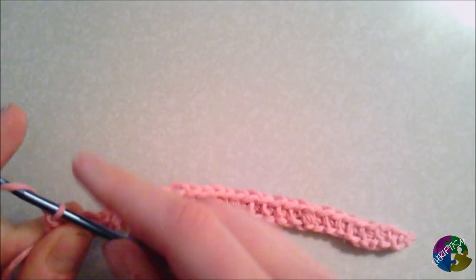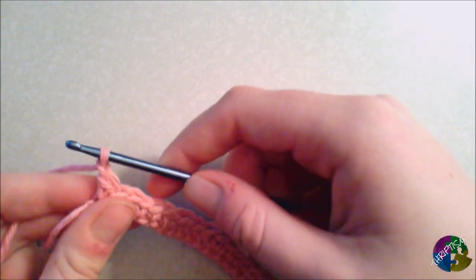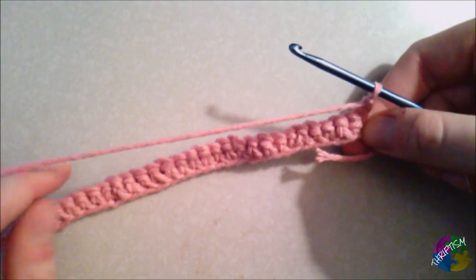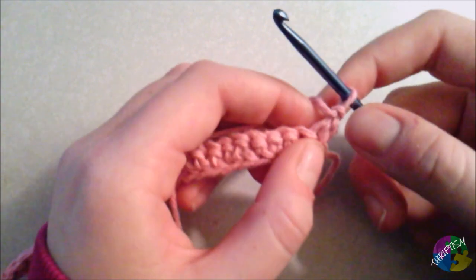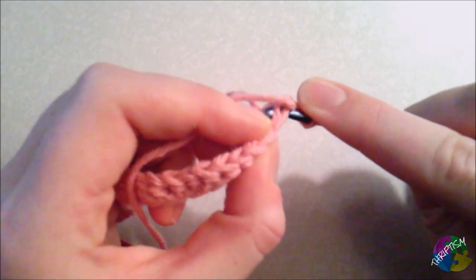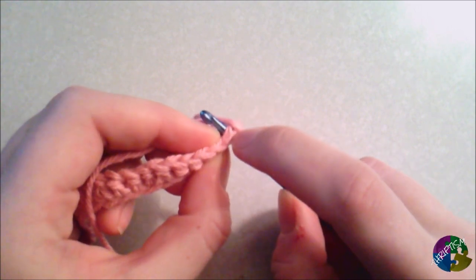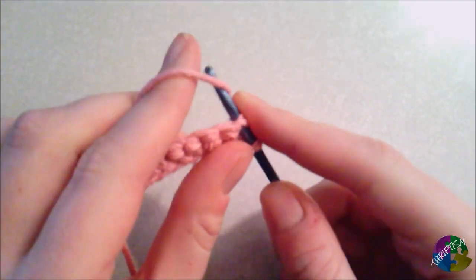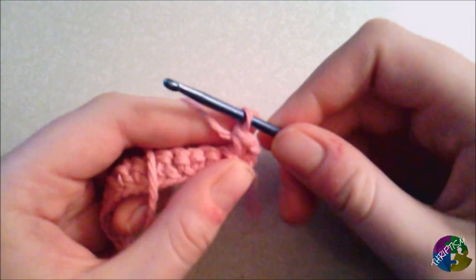Now, to continue, we'll want to chain one. Let's go ahead and pull that through. And now you're actually going to flip the whole thing over. So now you're back on the right side. And we'll go back through again. So we chained one, and then we'll go in here. Now you can see this time when I go through it, I actually go through both, so it's almost like there's three loops on there. And I will pull through, yarn over, and pull through both.